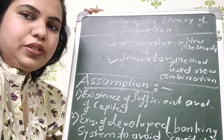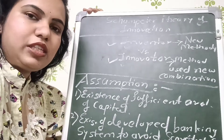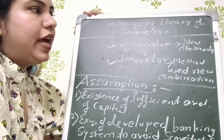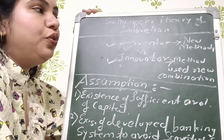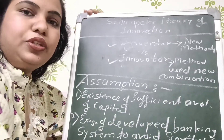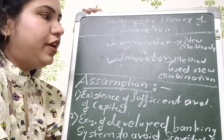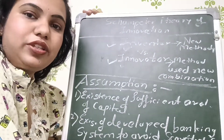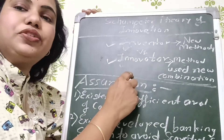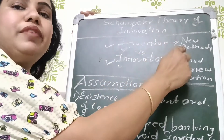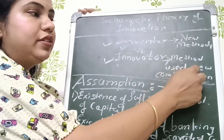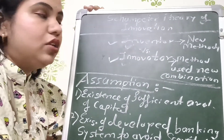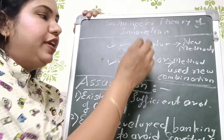As per Schumpeter's theory, an inventor is one who develops new methods of production. An innovator is one who uses those new methods in combination for manufacturing products. So Schumpeter gave the difference: inventor invents new methods, innovator uses those methods — combines them — and produces the product.